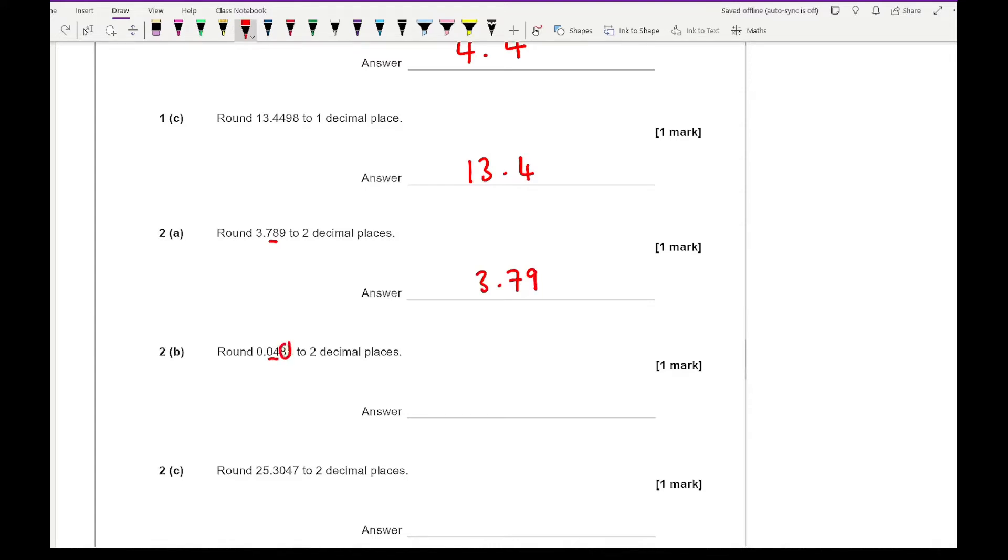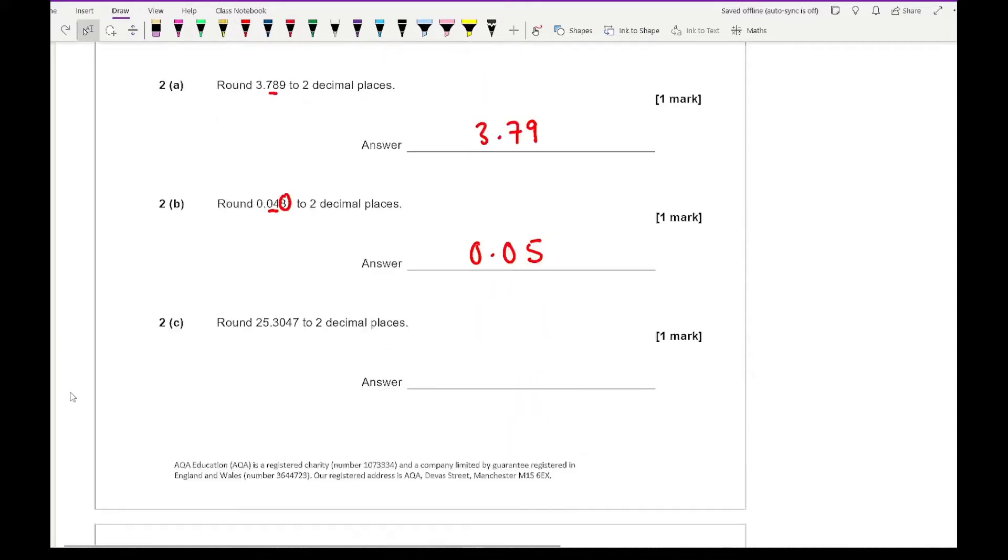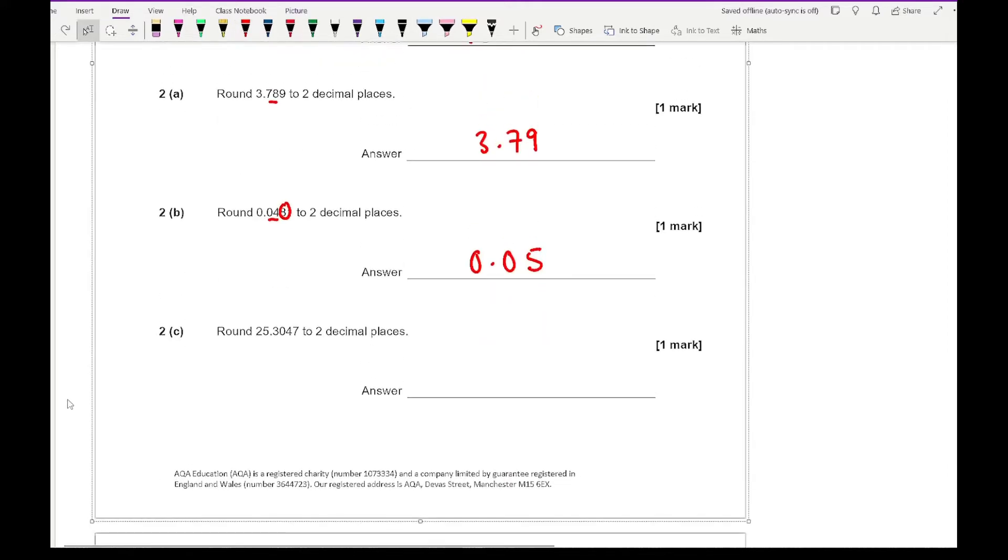For 2B, round 0.0481 to 2 decimal places. I'll circle the 8 and that's bigger than 4, so we add 1 to the underlined number, making it 0.05. For question 2C, round 25.3047 to 2 decimal places, and the correct answer is 25.30.